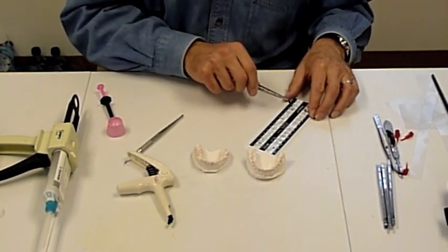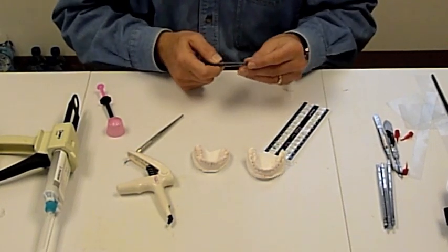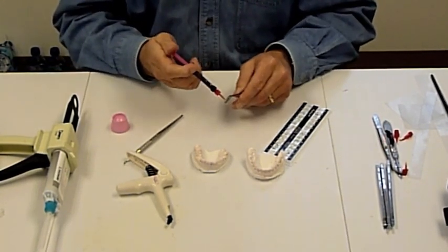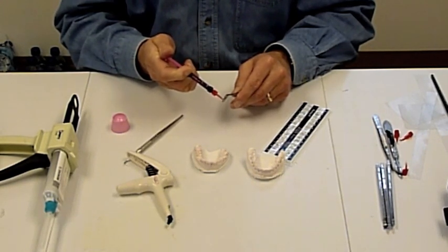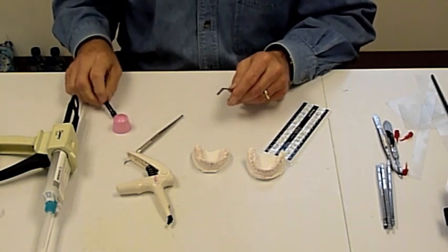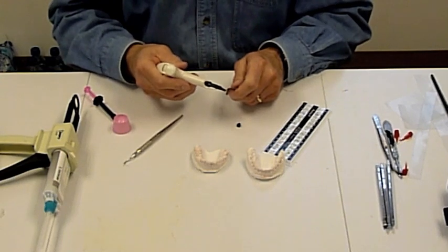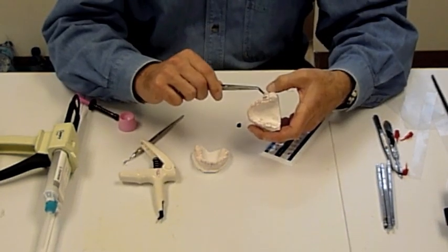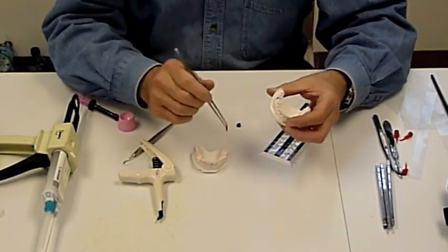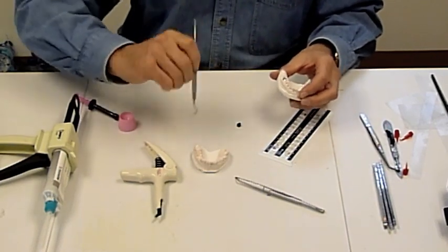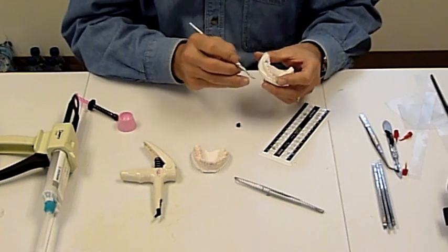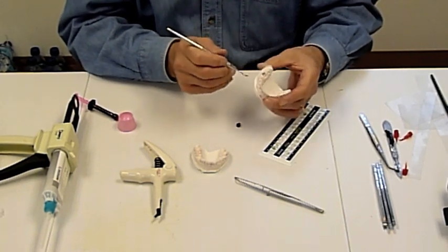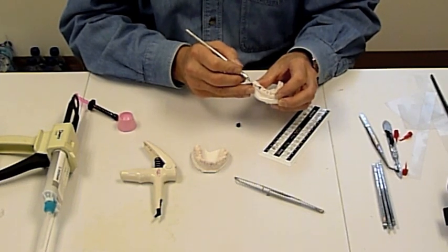We'll start with the lower right molar. We're going to use Opal Seal and Opal MX. Place it carefully on the model at the marked position, and be sure to remove the flash. We now have our molar bracket placed.